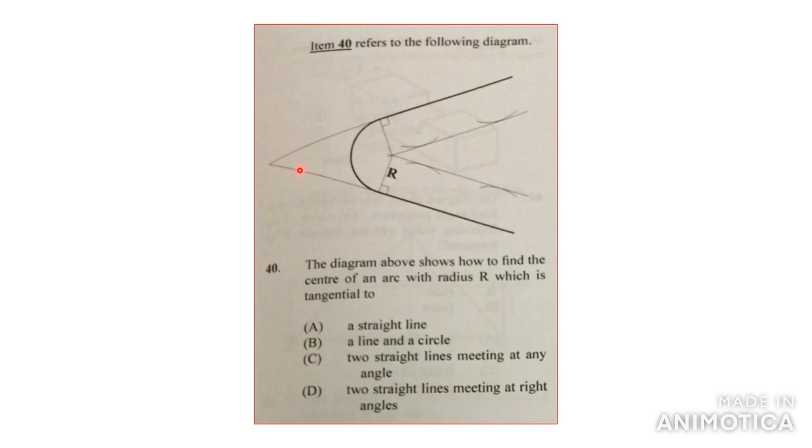Because you can see here, it's not a 90 degree angle. So they are meeting at any angle, but the circle or the arc is tangential to it.